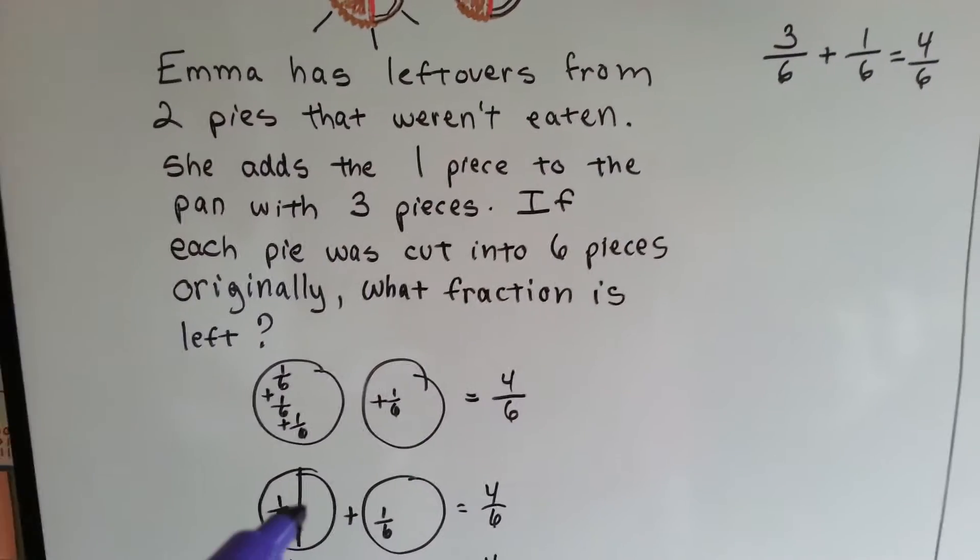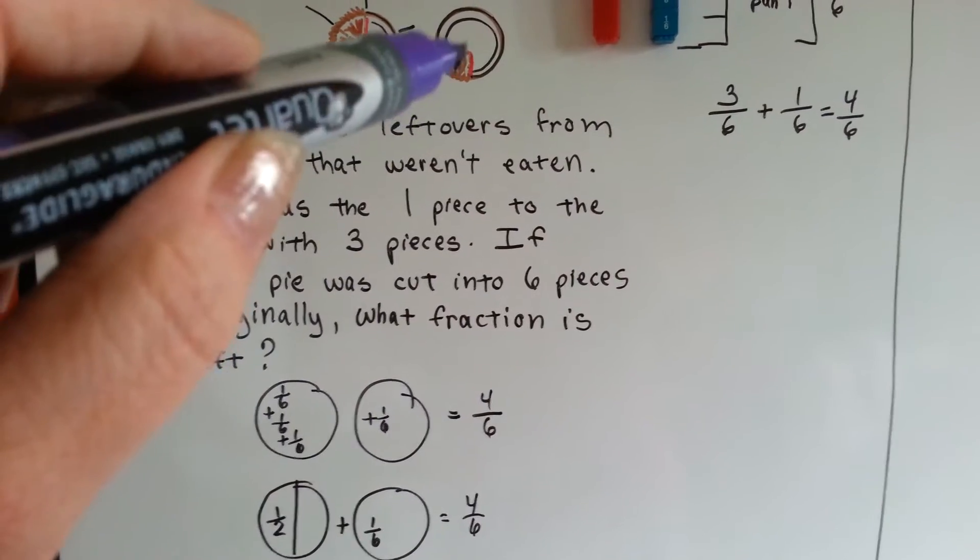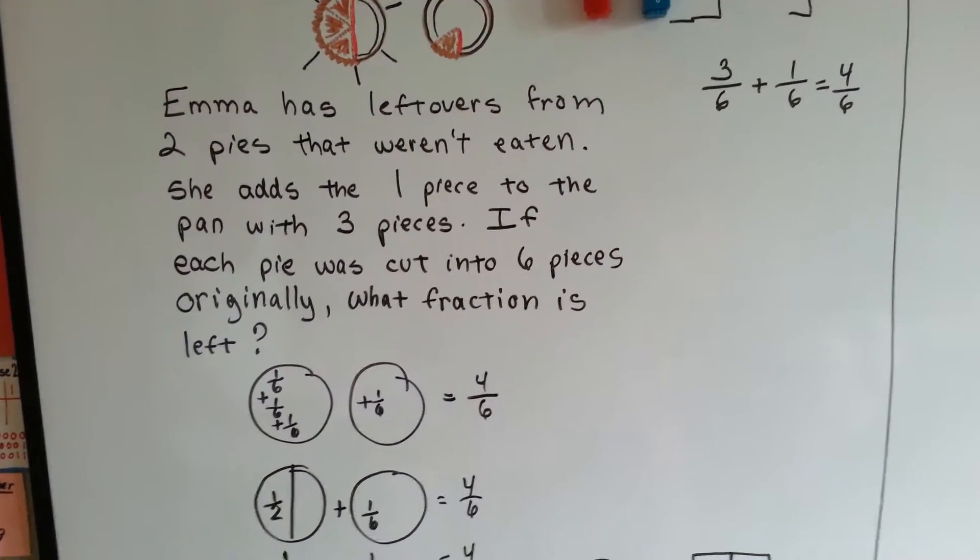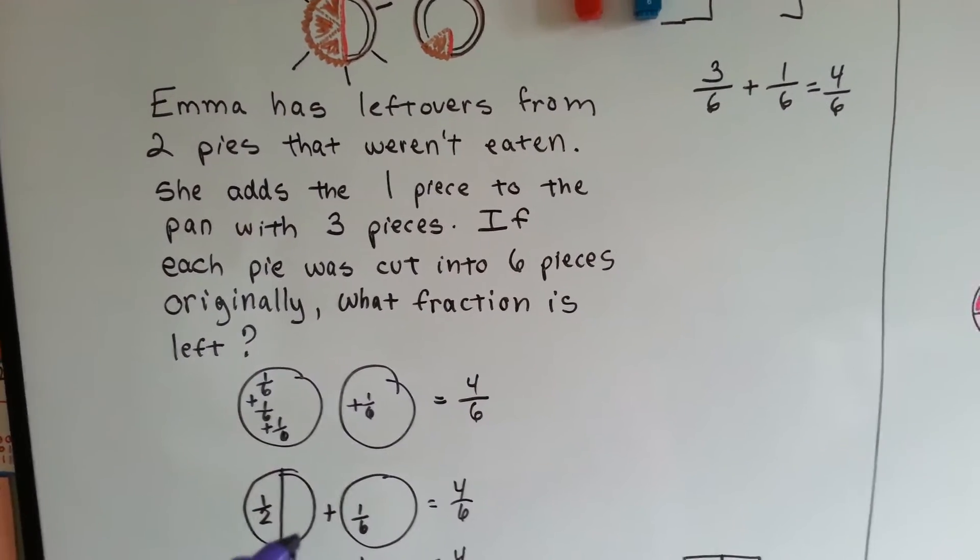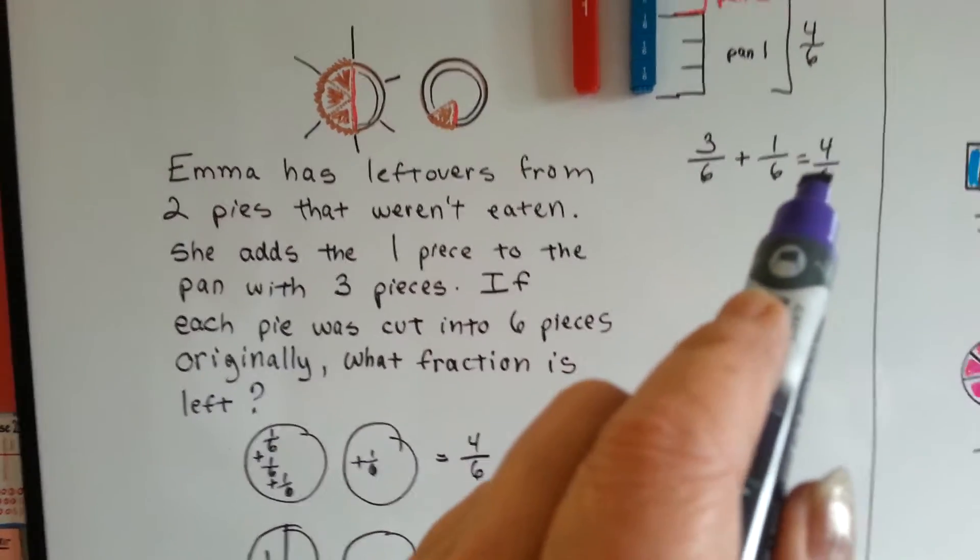When you add half of the pie to 1 sixth, we get 4 sixths. Now, how the heck did we do that? Because we were doing 3 sixths plus 1 sixth equals 4 sixths.